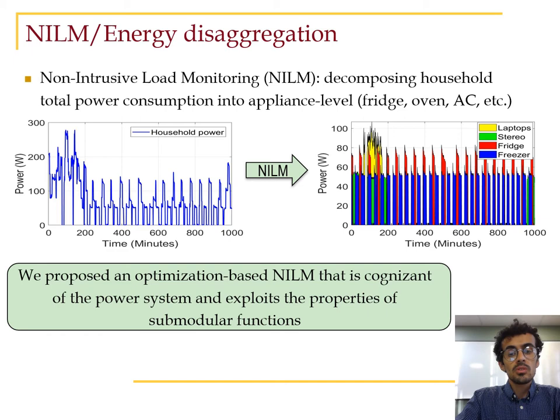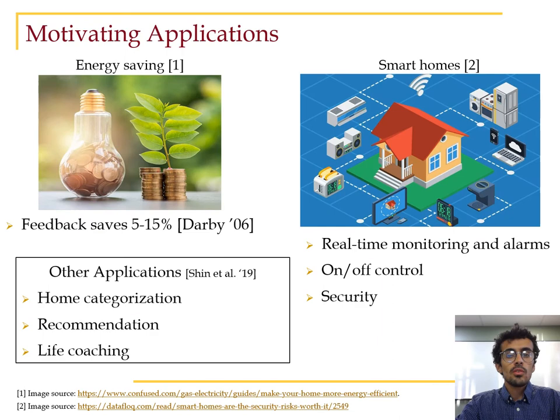In this work, we propose an optimization-based energy disaggregation method that recognizes the structure of the power system distribution networks, and it also utilizes the class of set functions known as submodular functions, which find wide use in machine learning applications. Most of NILM studies focus on disaggregation as a feedback to consumers to improve energy efficiency. Research studies show very significant savings that can be up to 15% when consumers are given detailed feedback.